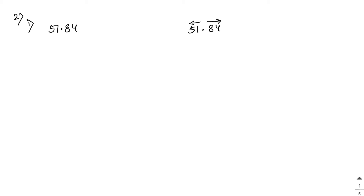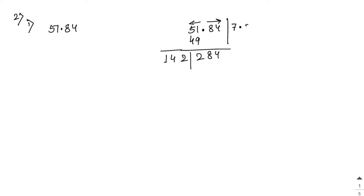For 51.84: 7×7=49, so write 49 under 51, giving remainder 2. Place the decimal point in the answer. Bring down 84. Double of 7 is 14. Try 142×2=284 — that works. So the square root of 51.84 equals 7.2.